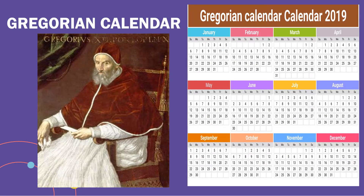The Gregorian calendar is named after Pope Gregory the 13th, who finalized it over 400 years ago. The Gregorian calendar is used worldwide. It has 12 months — the first month is January and the last month is December.